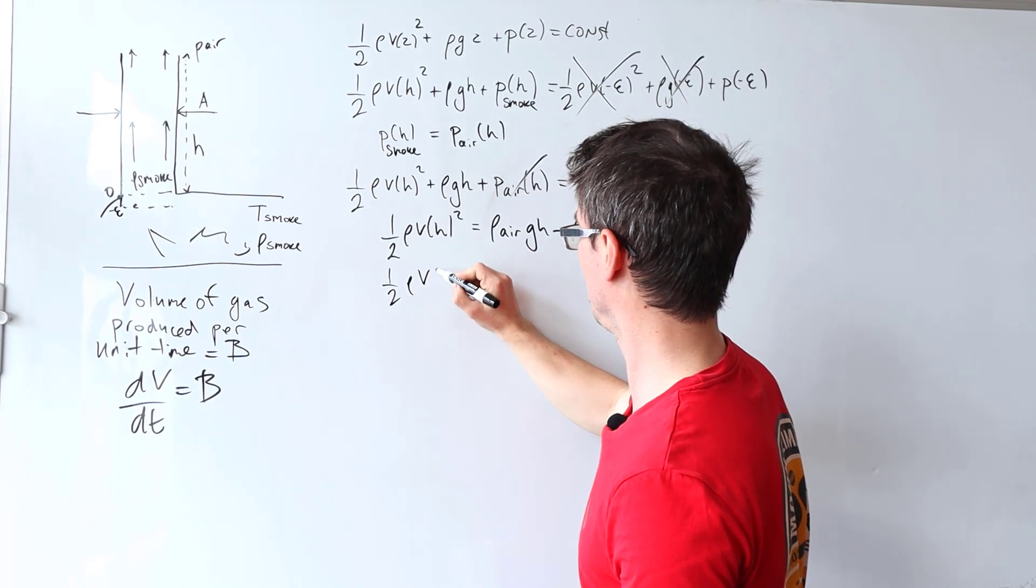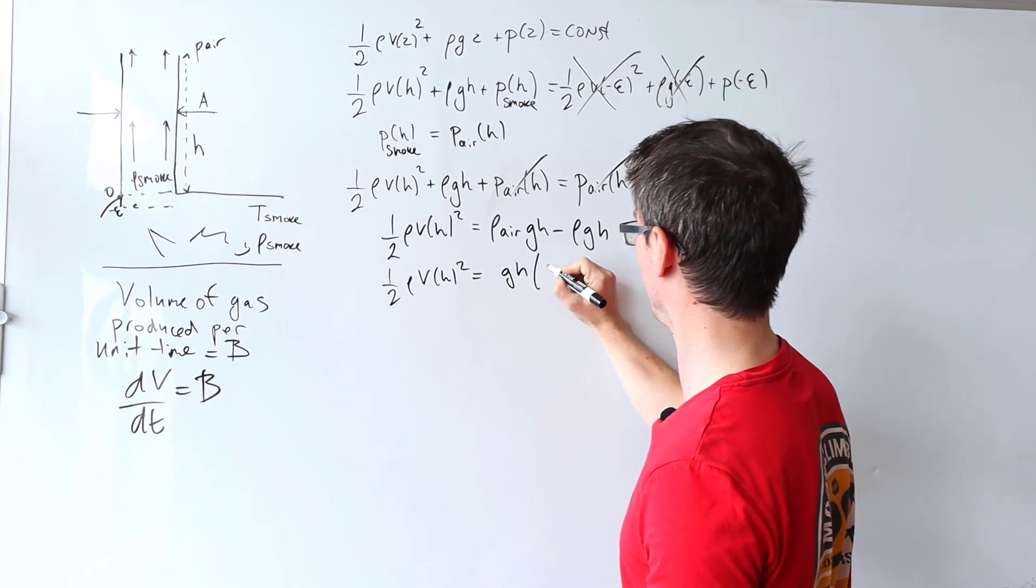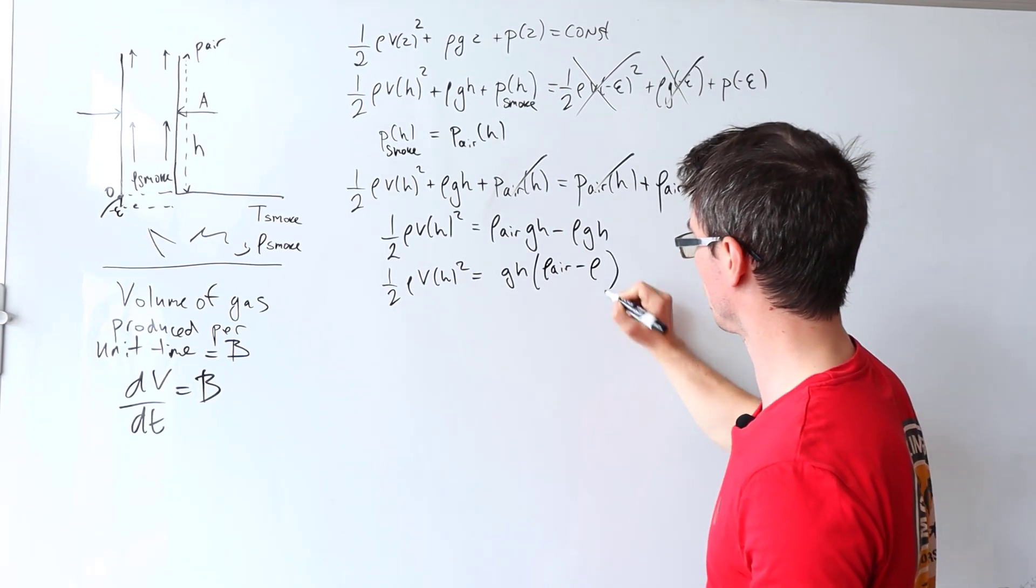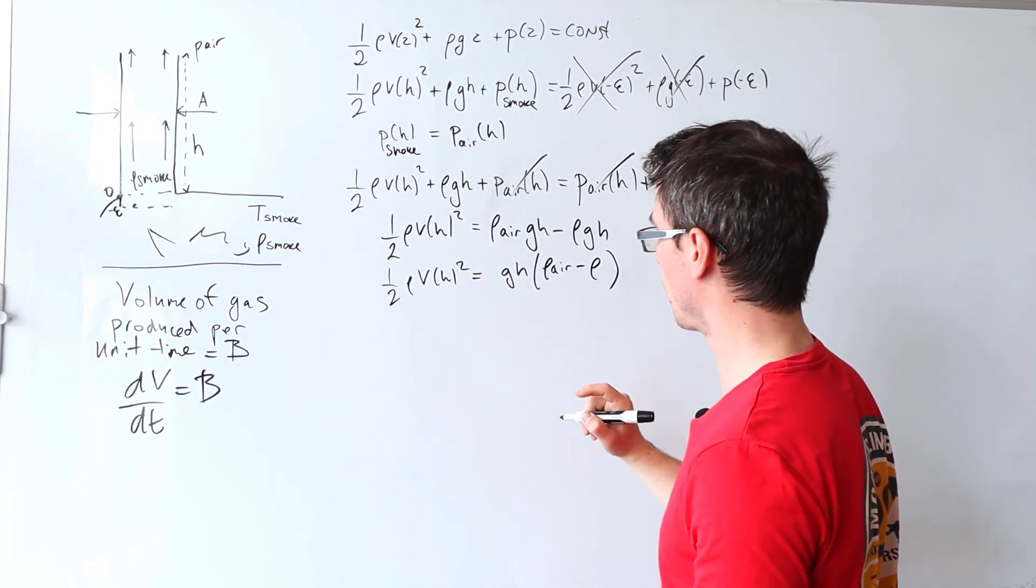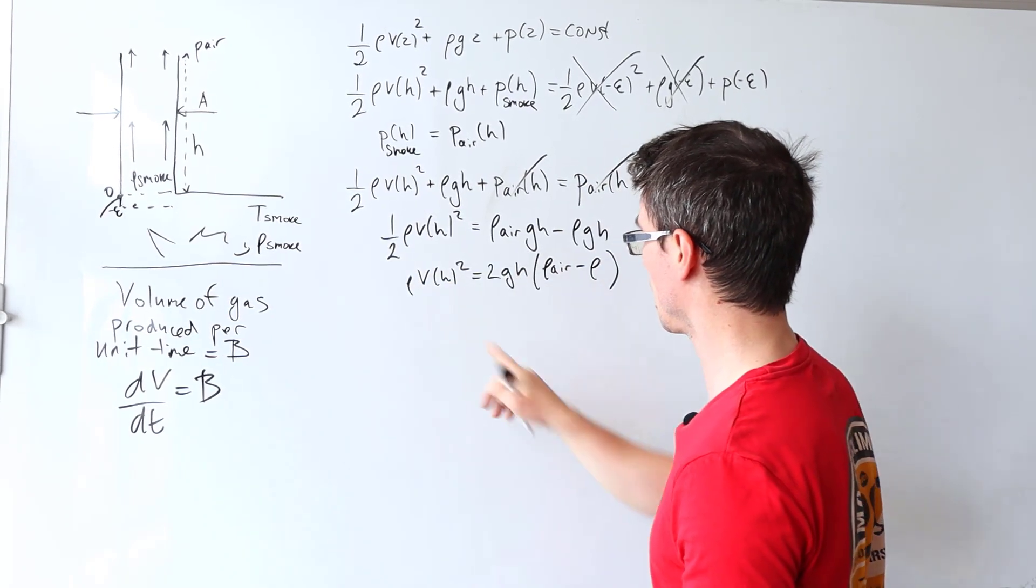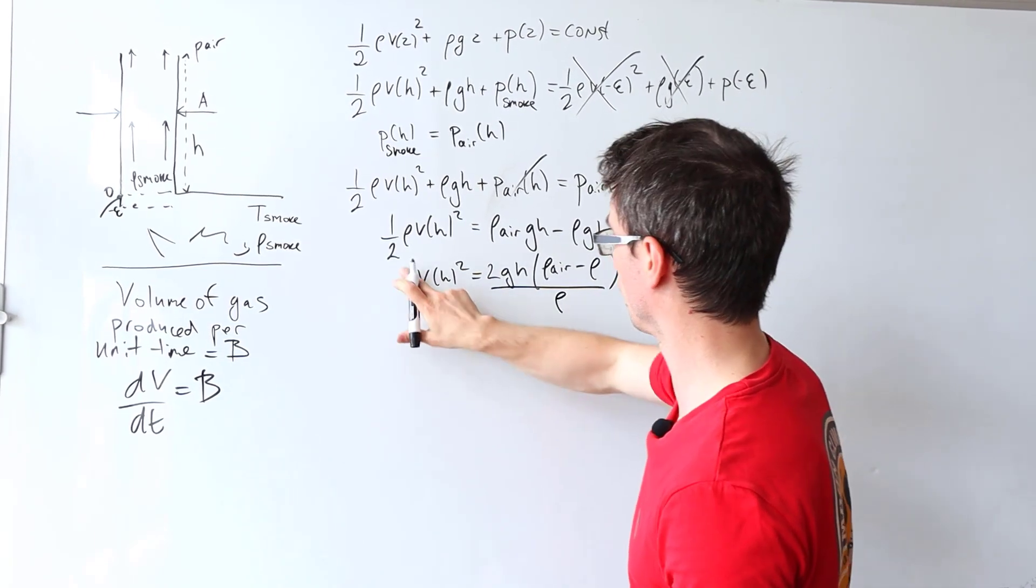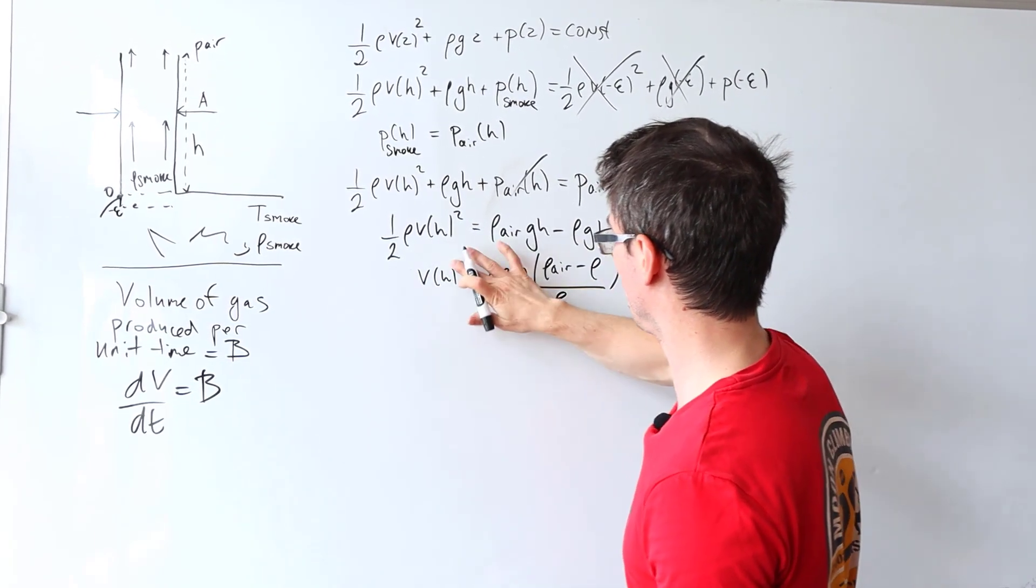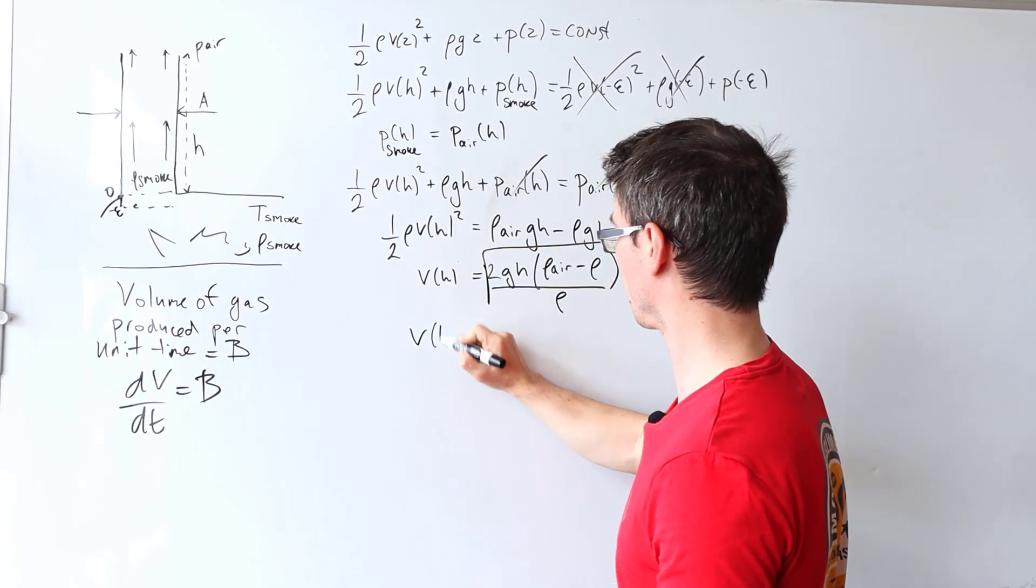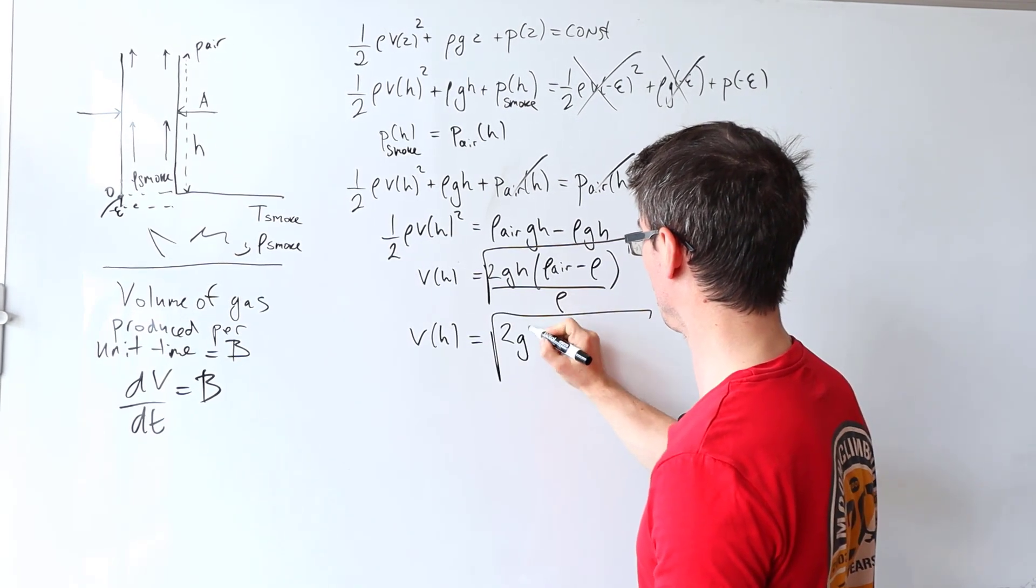Okay, then what we get is a half rho V h squared is equal to g h and then we have the density of the air take away the density of the smoke. Now let's bring this factor of two up here, then I'm going to divide the whole thing by rho, and then we're just going to square root this. Then we have our final expression for V h, which is going to be the square root of 2 g h.